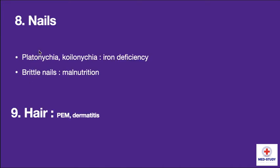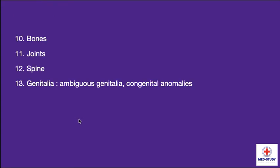Now coming to nails — we have to look for platynychia and koilonychia as seen in iron deficiency, and brittle nails as seen in malnutrition. For hair, the hair signs are positive in protein energy malnutrition and dermatitis. The last few points are bones, joints, and spine — we have to inspect for kyphosis, scoliosis, etc. Then coming to the genital area — we have to inspect for ambiguous genitalia or if congenital anomalies are present.